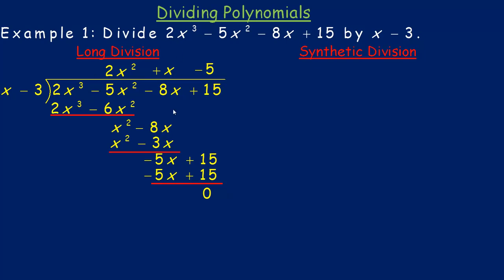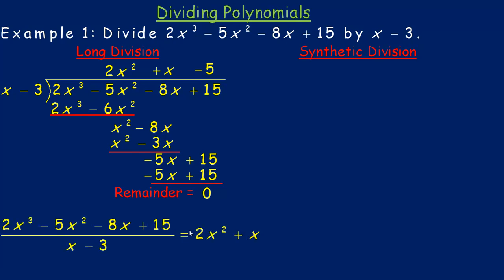So that's how we divide by long division. The 2x cubed polynomial divided by x minus 3 equals 2x squared plus x minus 5. There are two different ways to write the division statement. We divided x minus 3 into this polynomial and we got 2x squared plus x minus 5.